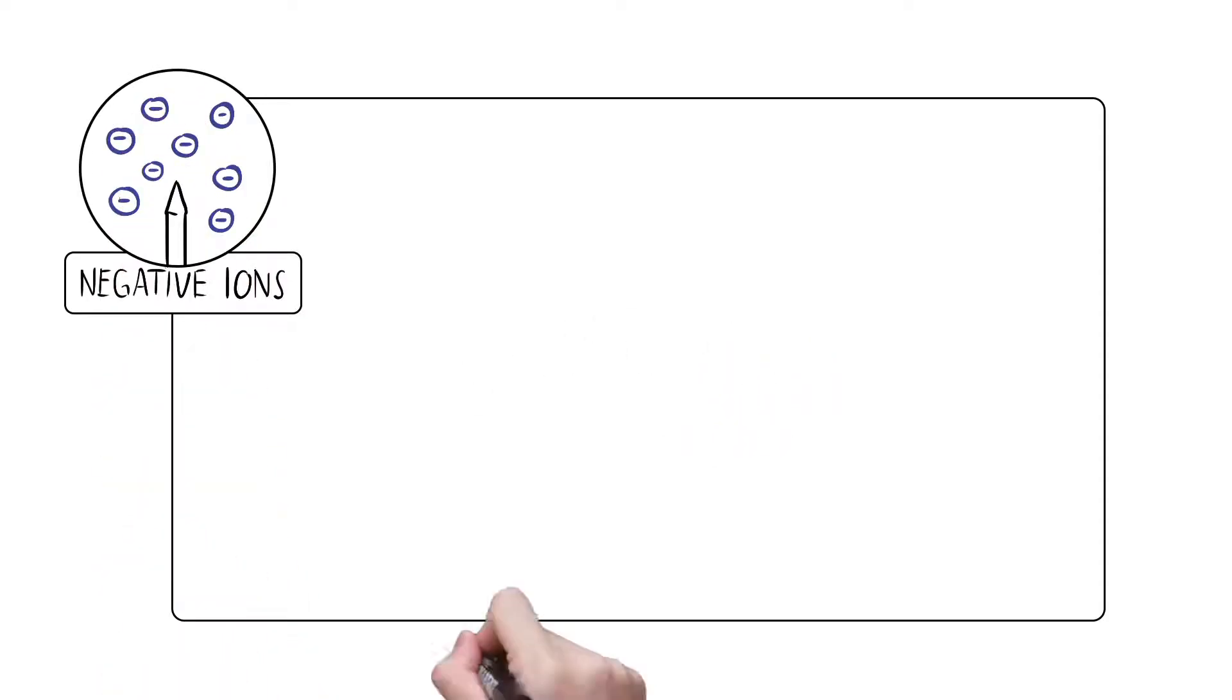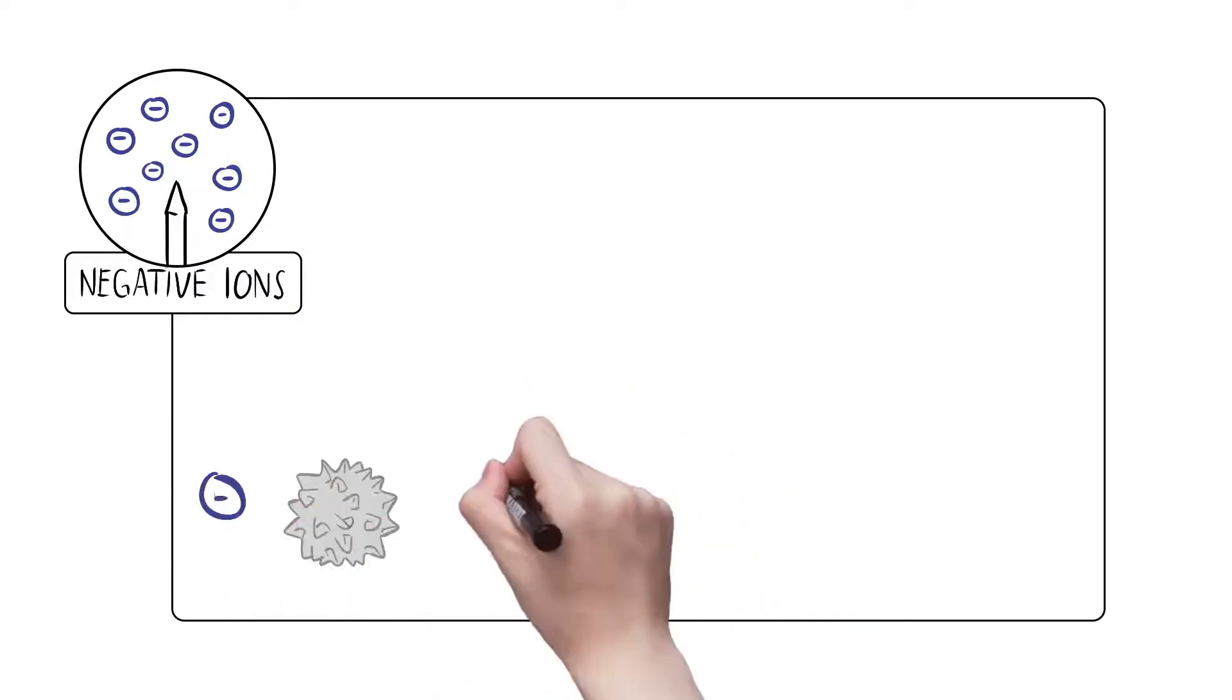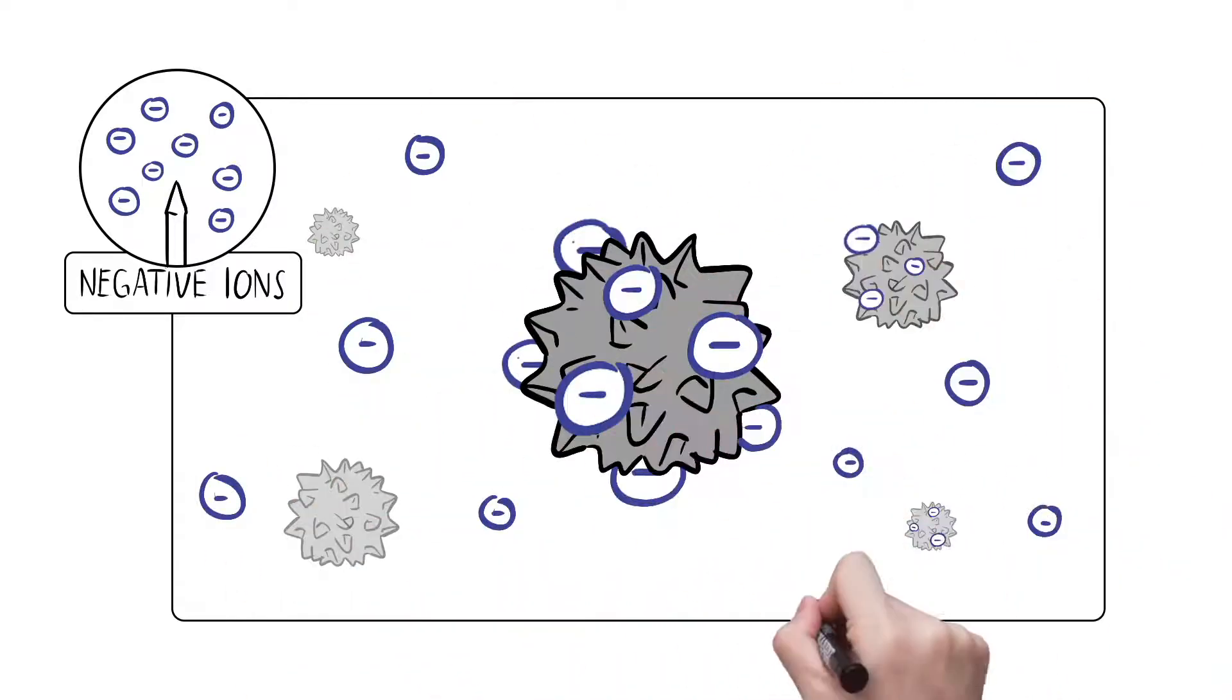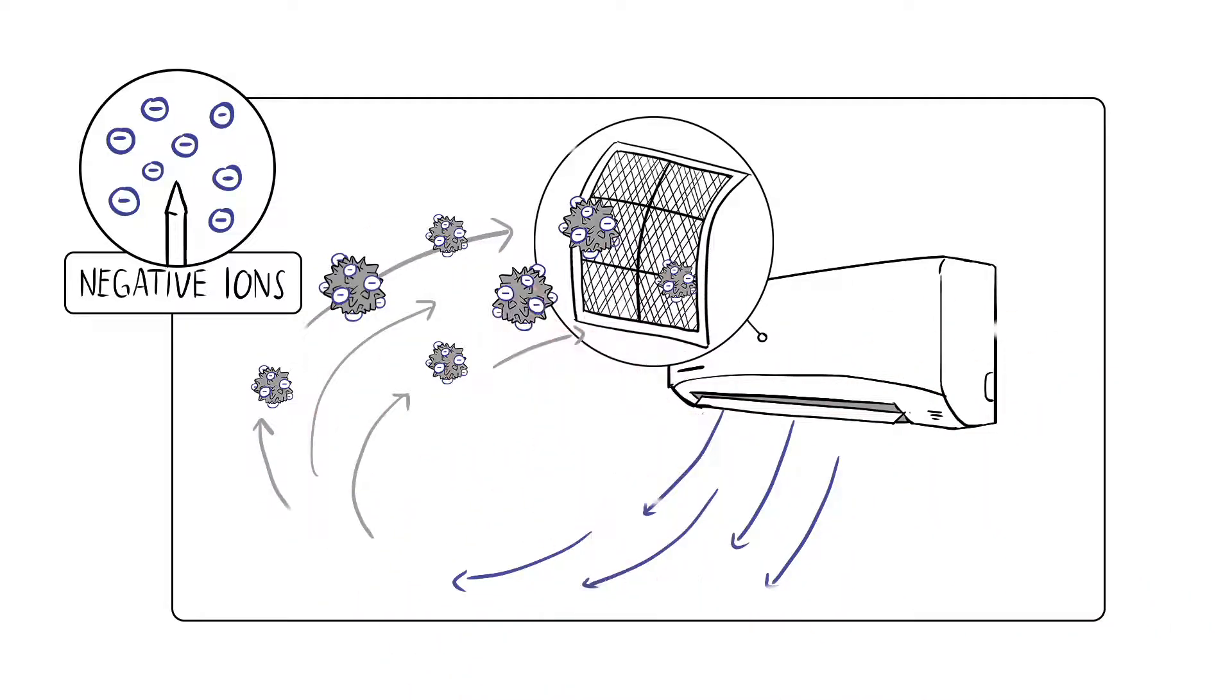2. Negative ions. The ion generator releases negative ions. Negative ions attach to dust particles. These particles are carried back and trapped at the filter, circulating purified air.